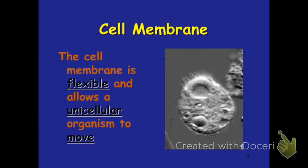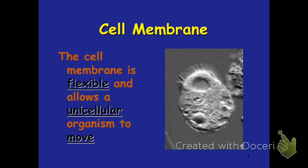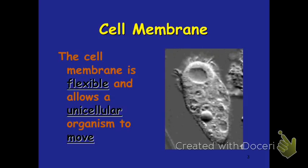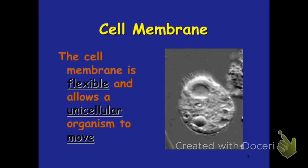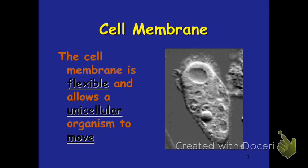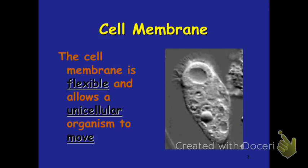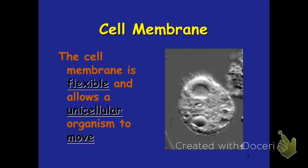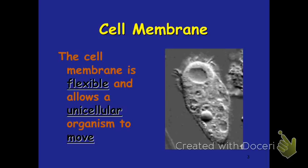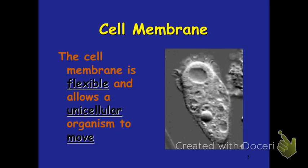First and foremost, the cell membrane has to be flexible. As animals, we're able to move ourselves — we are not stiff or rigid. Especially for this unicellular organism, this protist pictured here, you can see it's able to move and interact with its environment because of the flexibility of the cell membrane.